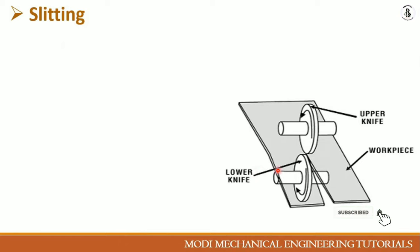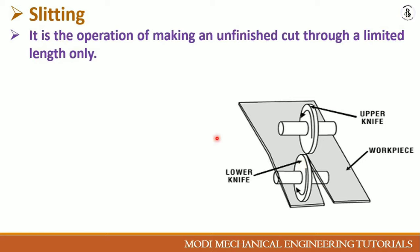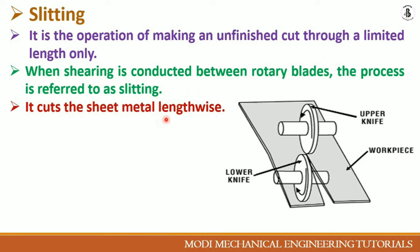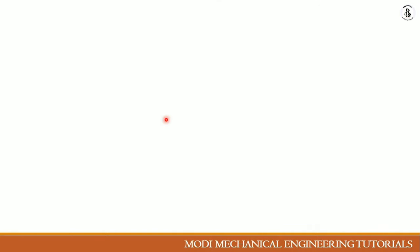In slitting operations, an upper knife and a lower knife are used. The workpiece passes between the two cutting edges, and the rolling action of the upper and lower knives divides the metal into two surfaces. It is a process of making a cut through a limited length; when shearing is conducted between rotary blades, the process is referred to as slitting. It cuts the sheet metal lengthwise according to the required shape and size.